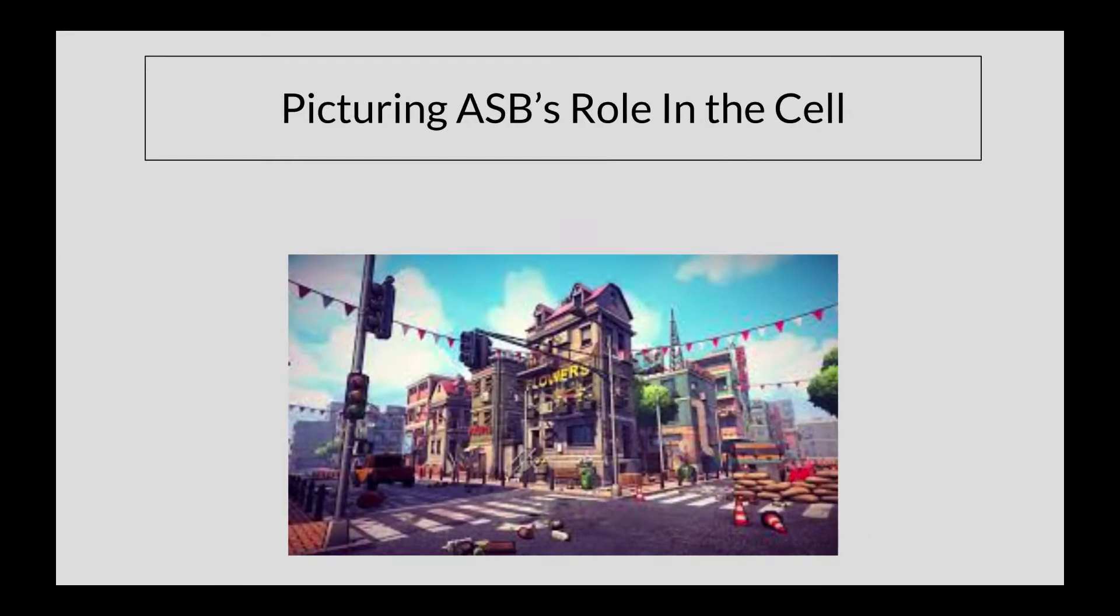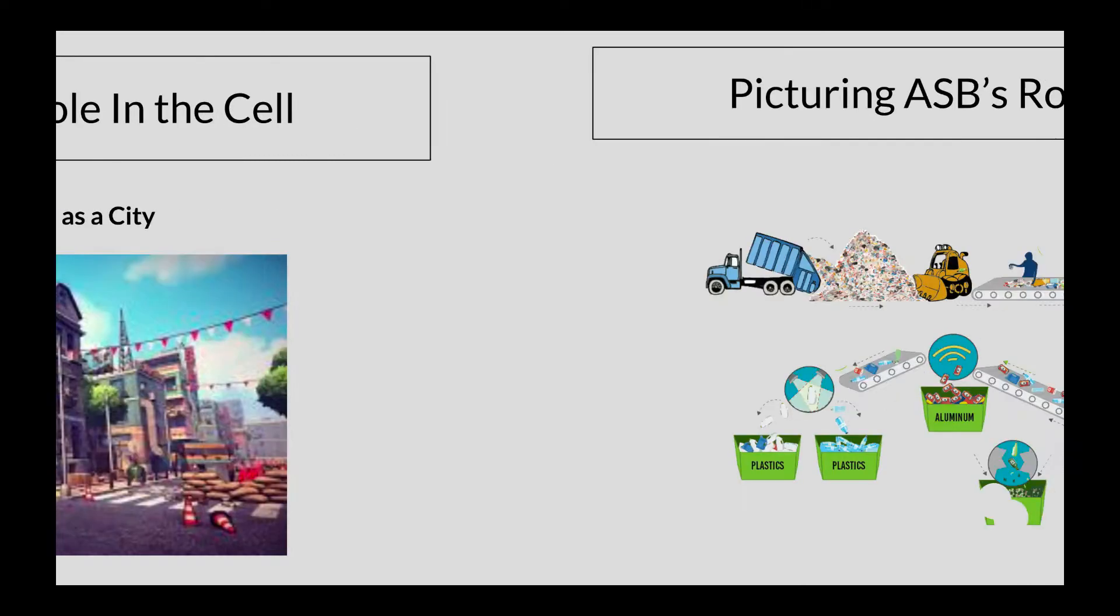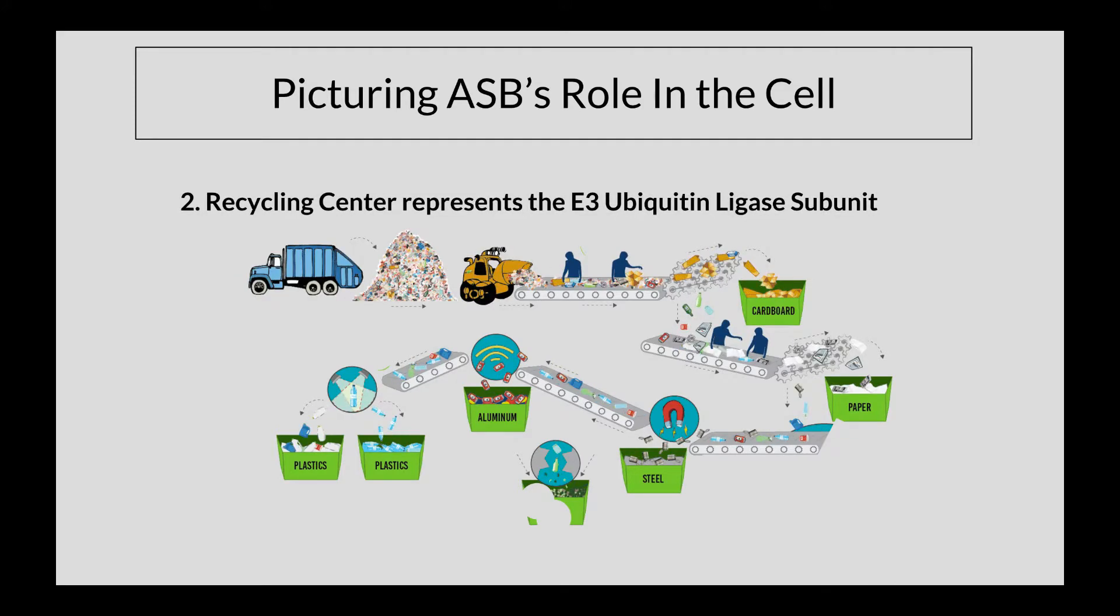In order to better understand the role of Ankyrin repeats in the ubiquitination process, we can picture ourselves as a city. Each city has a recycling plant. The recycling plant would represent the E3 ligase complexes.